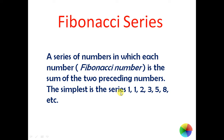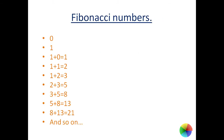Good morning friends. In this video on Fibonacci series, we learn how to trace a Fibonacci spiral. The Fibonacci series is generated by adding the sum of two preceding numbers. If the first number is 0 and the second is 1, the third number is 0 plus 1 equals 1, the fourth is 1 plus 1 equals 2, then 3, 5, 8, 13, and so on.